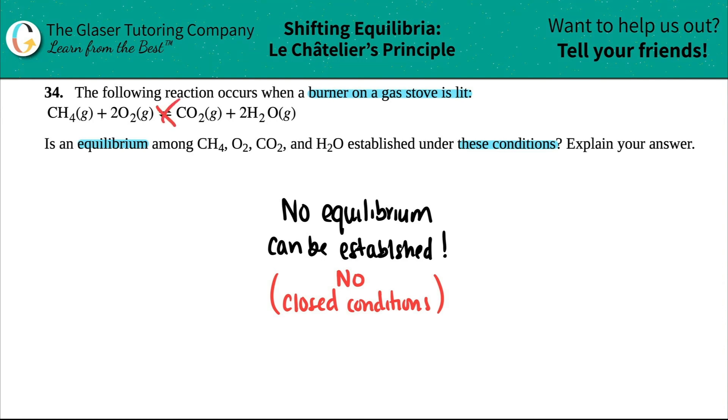So no equilibrium is established, so technically we should not have these double arrows, it should just be a single arrow. And the reason is because this reaction is not in a closed condition.